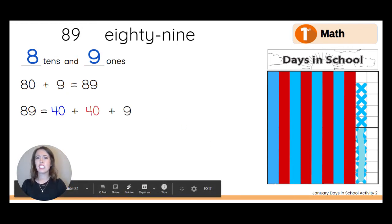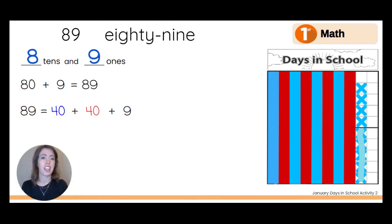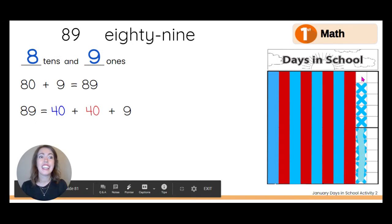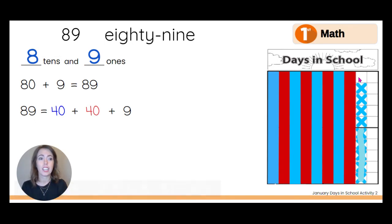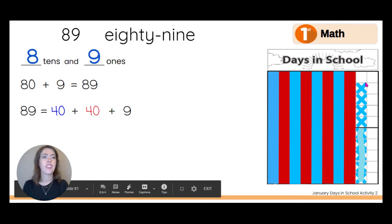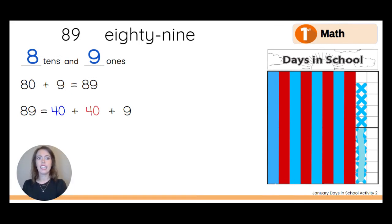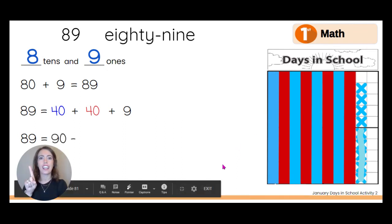For the next one, let's do a subtraction problem. I noticed that this is almost 90. If there was one more x right here, that would make another 10 rod, and this would be 90. 89 is the same as having 90, and then minus, how many is missing right here? Just one. So 90 minus one is the same thing as 89. Or 89 equals 90 minus one.